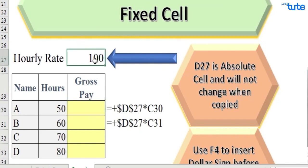Let's insert the formula over here: equals, then select the hourly rate cell which is D27, then we need to press F4 after the cell which we want to be fixed.